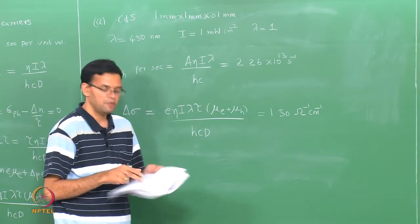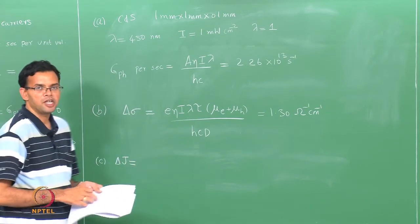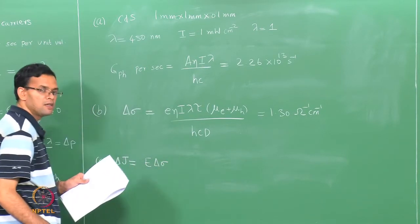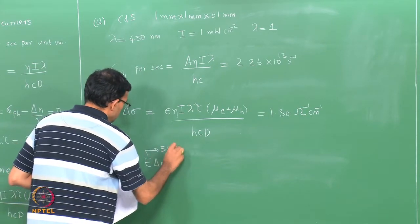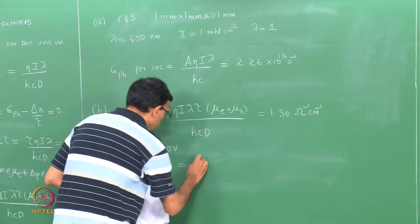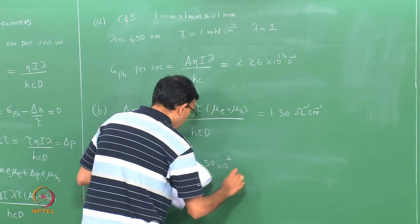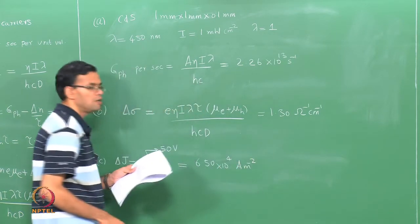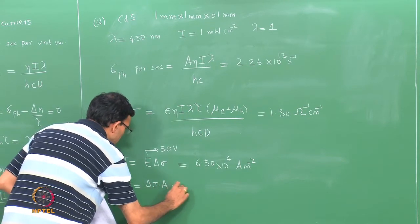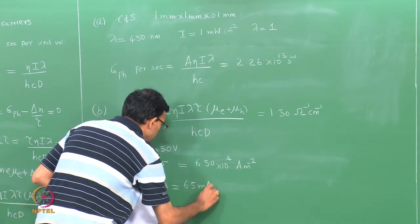In part (c) we calculate the photo-current Δj when a potential of 50 volts is applied. Δj = E × Δσ, where E = 50 V. Calculating gives Δj = 6.50×10⁴ A/m². The current ΔI = Δj × A works out to 6.5 milliamperes.